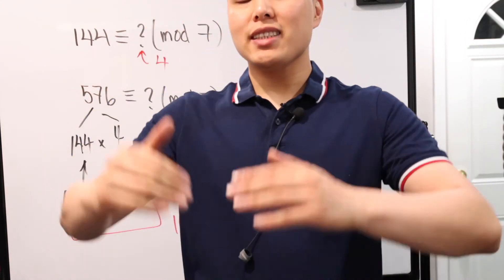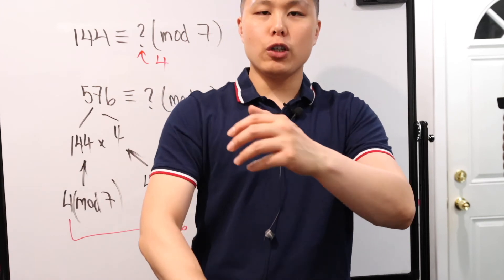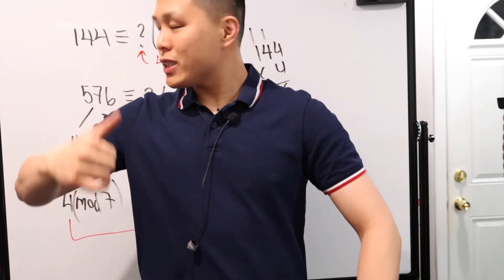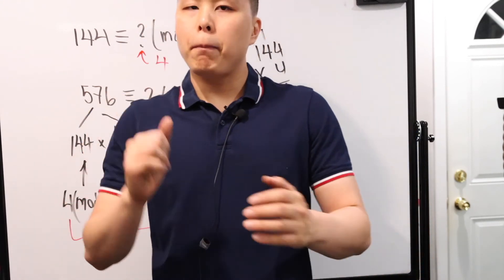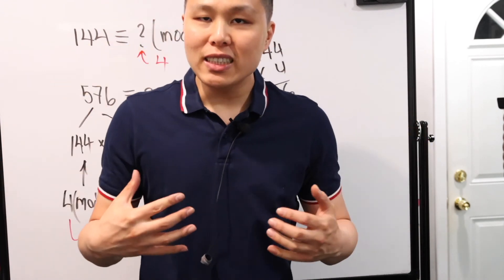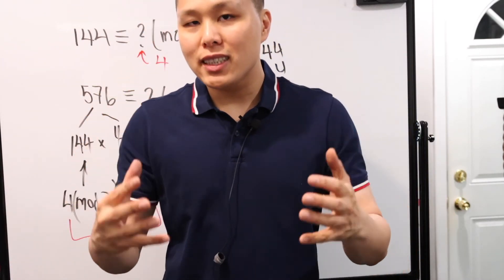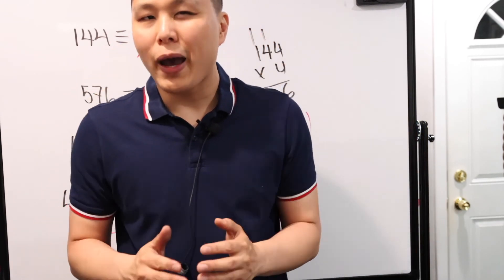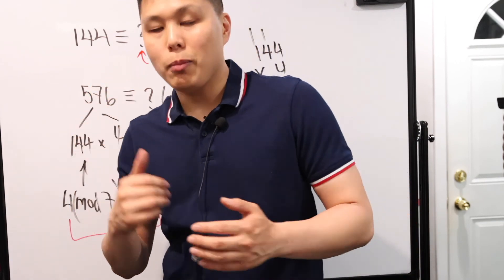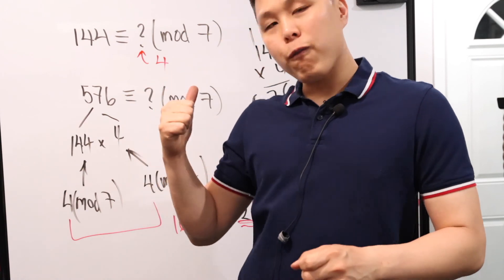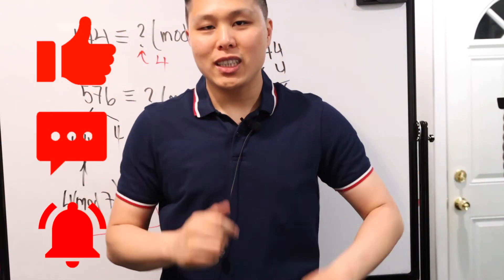So there you have it. Hopefully this ties up the series of basic introductions to modular arithmetic. We've covered the basic introduction, different notations with and without parentheses, negative numbers, and now our two properties. There are definitely more theorems, corollaries, and results that are fascinating but more complex. Hopefully this series shows that modular arithmetic is not nearly as bad as your gut reaction might suggest. Thank you for watching — please like, comment, and subscribe.